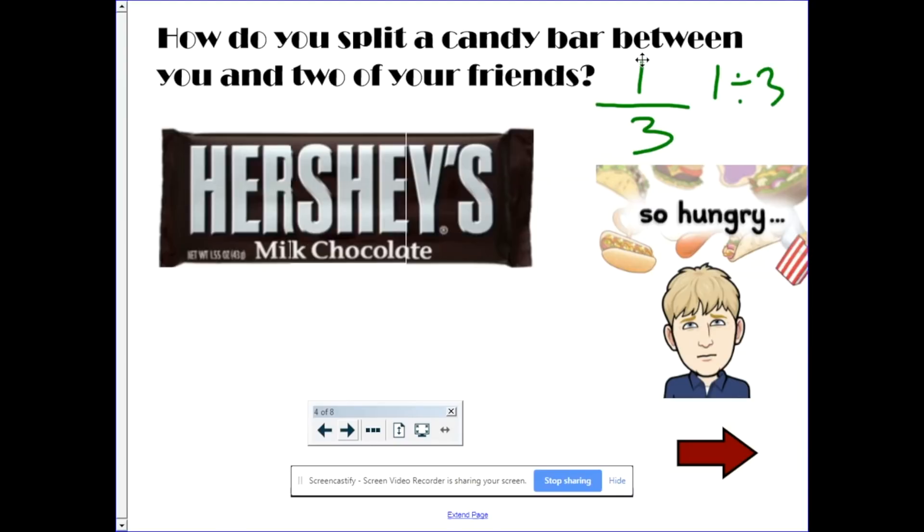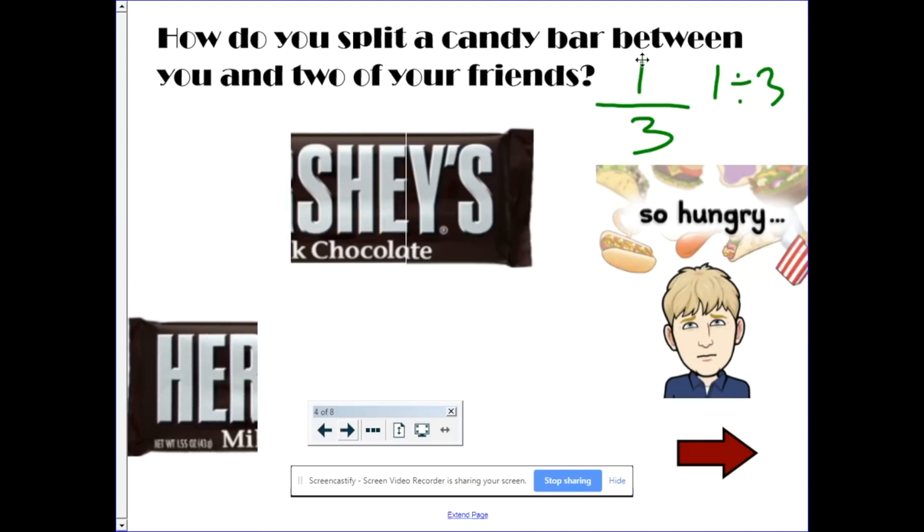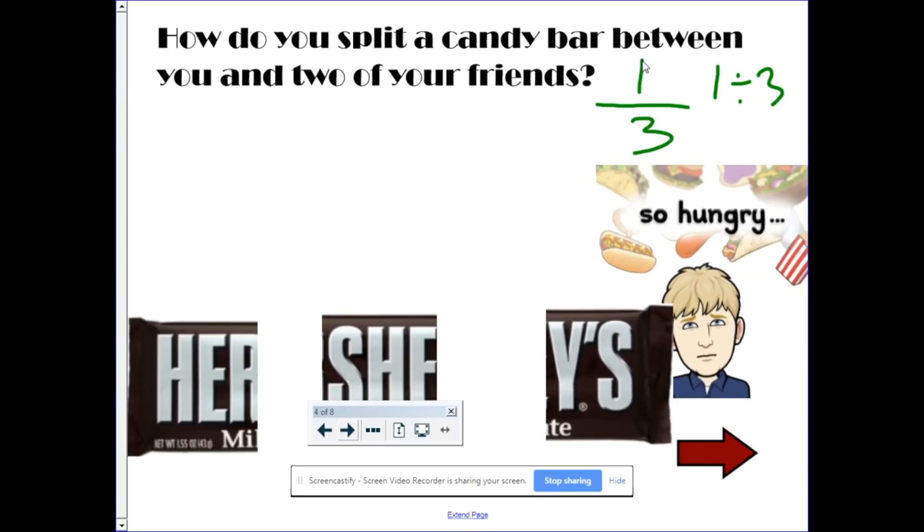Each person would get one-third. One-third here, one-third here, one-third here. This is you, your first friend, and your second friend. Each person gets one-third, or 1 divided by 3.